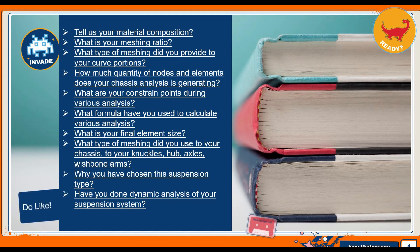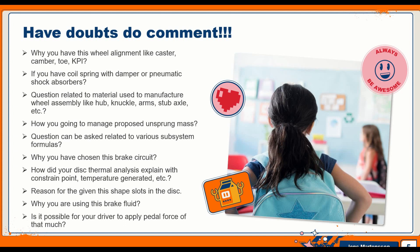19. Why have you chosen this suspension type? 20. Have you done dynamic analysis of your suspension system? 21. Why do you have this wheel alignment — caster, camber, toe, and KPI? 22. Do you have a coil spring with damper or pneumatic shock absorbers? 23. Questions related to material used to manufacture wheel assembly like hub, knuckle, arms, stub axle, etc. 24. How are you going to manage the proposed unsprung mass?